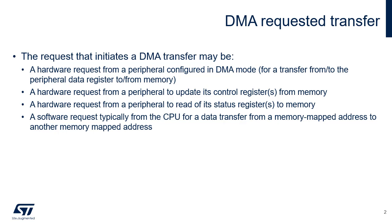A software request can also start a DMA transfer. This is typically caused by the CPU writing to a control register of the DMA controller in order to transfer data from a memory mapped address range to another memory mapped address range.